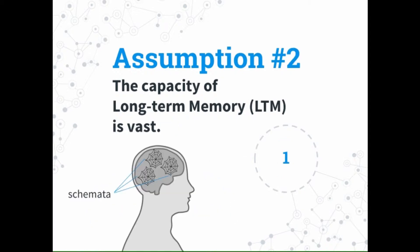The second assumption is that long-term memory has a vast, essentially infinite capacity. When we make connections in our long-term memory and form sets of schema, those connections ball up together and become one of those seven plus or minus two chunks. So the more we can build those connections in our long-term memory, the more we can handle in our working memory at one time.